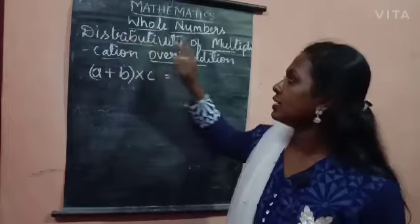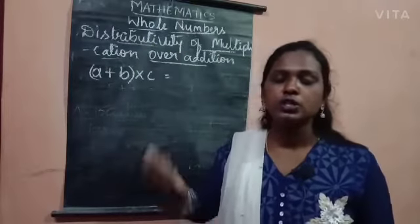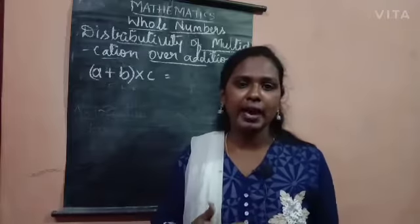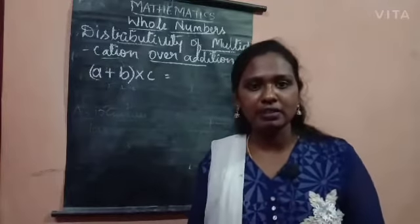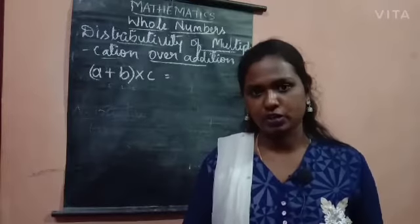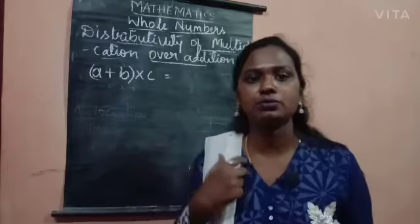The last property you have is distributivity of multiplication over addition. In this property you will be having two sums, that is addition and multiplication. All that you have to do is you have to split the numbers and you have to find the product.